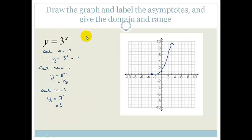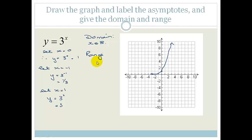If we write the domain and range: the domain is your x values for which this is valid, and you can see it goes from negative infinity to positive infinity, so x is an element of real values. But your range is special because the x-axis is the asymptote — y equals 0 is our asymptote. The graph never touches it and never goes below it, so y is an element of real values where y is greater than 0.